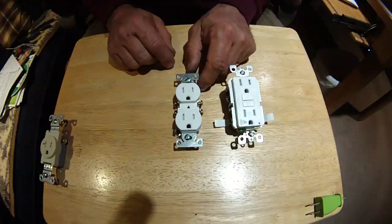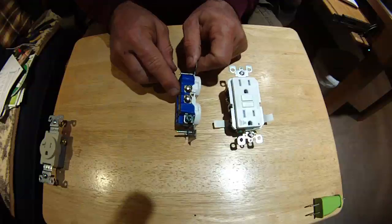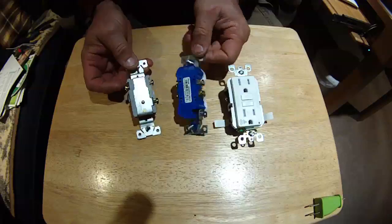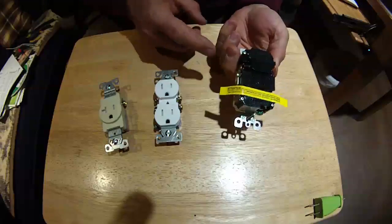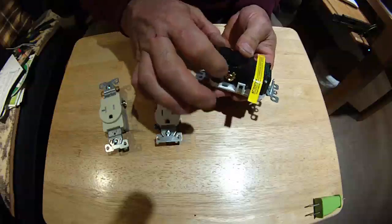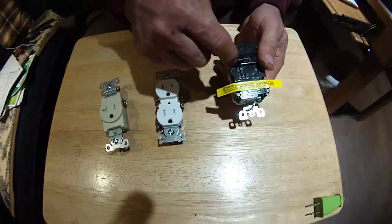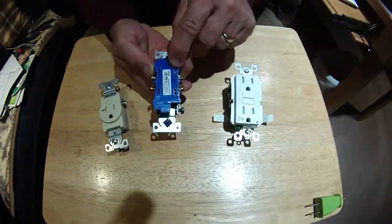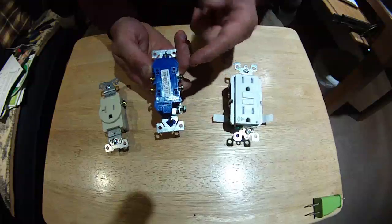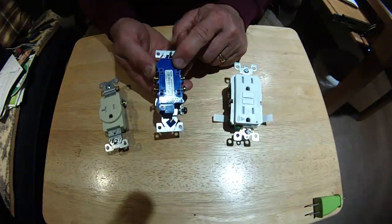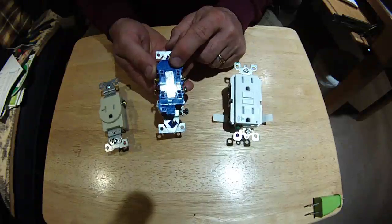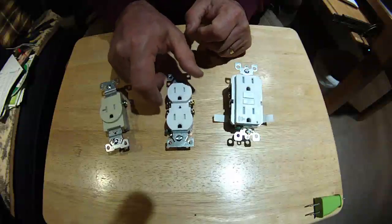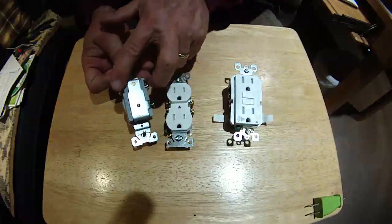This receptacle has hard terminations, just like our single receptacle. The GFI receptacle has little platens in there, so you don't have to make hooks like you do with these. You can just stick the wire straight in, tighten them down, and it gives you a good solid connection unlike the stab connections on the back of here. They're all spring-loaded, which means if you heat them up with an excessive load like a baseboard heater or air conditioner, that spring loses tension and you'll possibly lose connection.